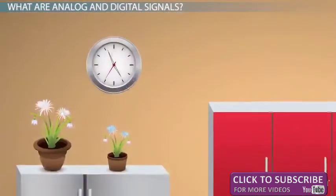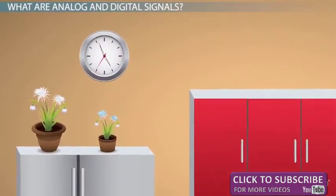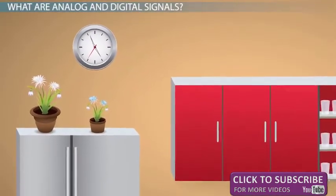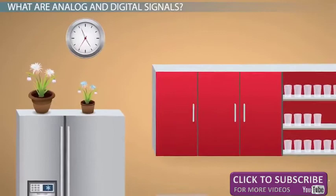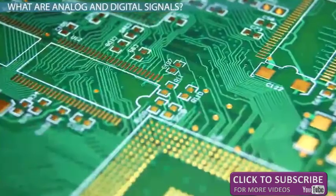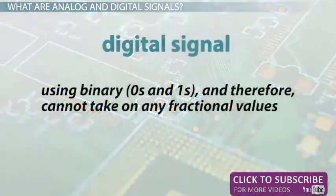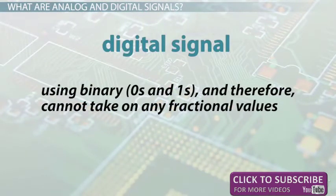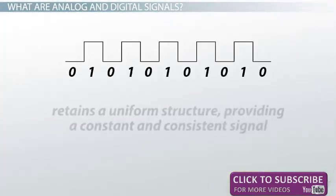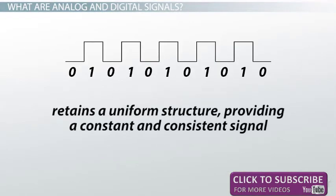Even a typical kitchen clock having its hands moving continuously can be represented as an analog signal. A digital signal, a must for computer processing, is described as using binary zeros and ones, and therefore cannot take on any fractional values. As illustrated in the graphic, the digital signal retains a uniform structure, providing a constant and consistent signal.